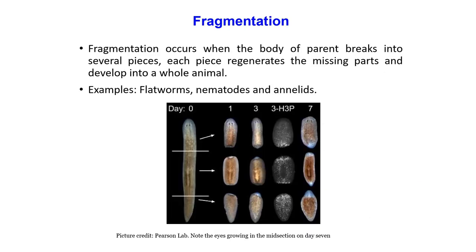Fragmentation occurs when the body of the parent breaks into several pieces. Each piece regenerates the missing parts and develops into a whole animal. Examples include flatworms, nematodes, and annelids.